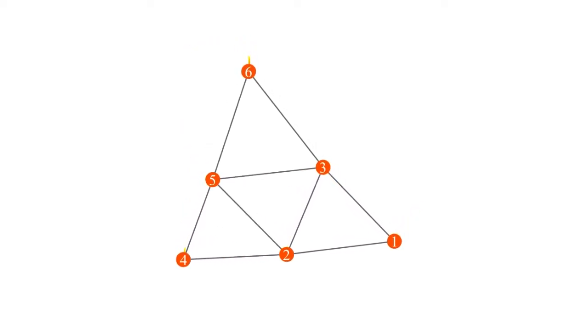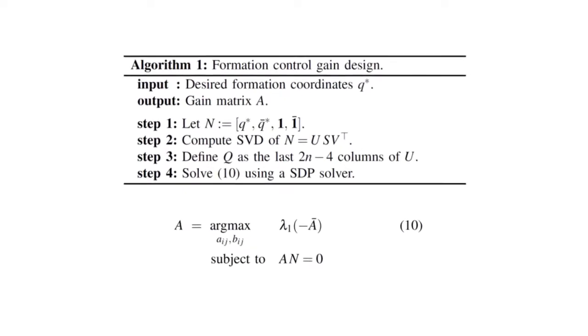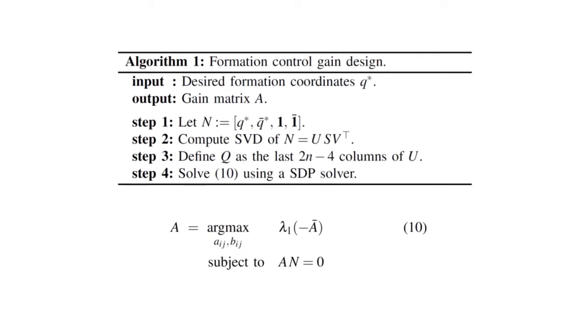When the inner agent sensing graph is undirected and universally rigid, our novel algorithm for finding the gains based on semi-definite programming ensures that the desired formation is achieved globally.